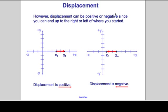Displacement can be positive or negative because you end up to the right or the left of where you started. If you start at one location and end up to the right, your displacement is positive. If you start at an initial position and move to the left, your displacement is negative. So displacement is how far you move and in which direction — it can be positive or negative.